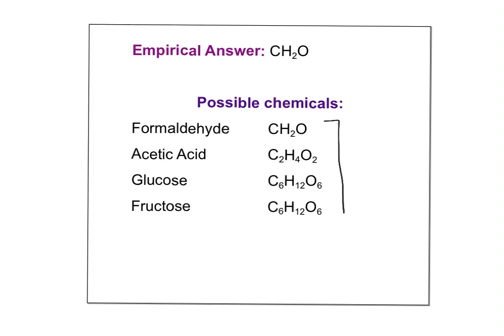Just to remind you — we got the empirical formula, and all of these would be possible chemicals for this empirical formula, because it's just the lowest whole number ratio. We could have formaldehyde, where the formula matches the empirical. If we double everything, we get acetic acid, C2H4O2. If we use six times everything, we get glucose or fructose, depending on how the elements are arranged.